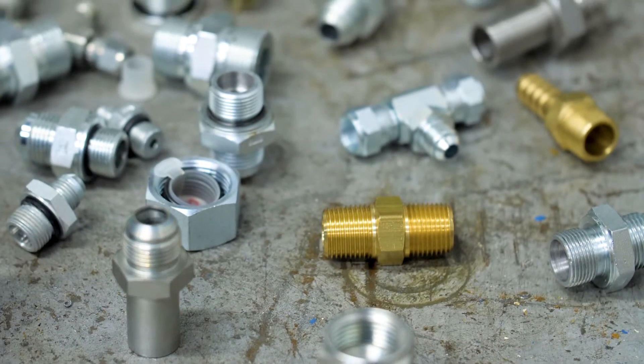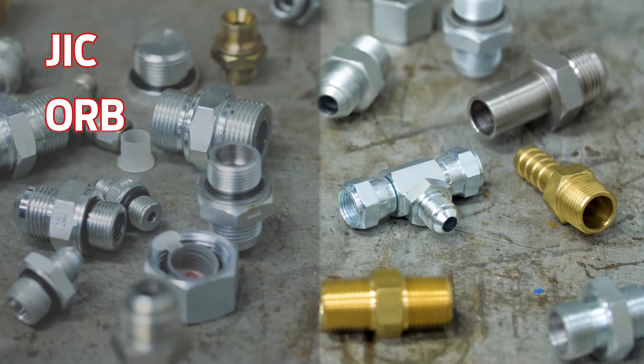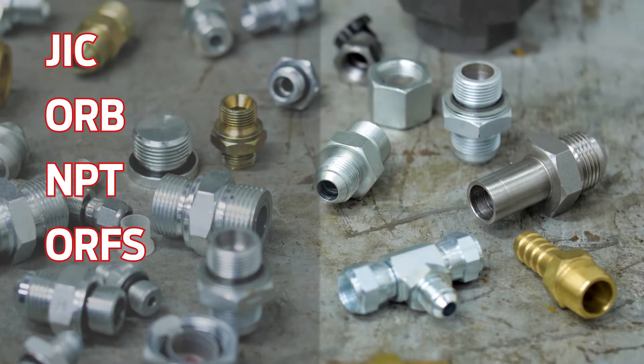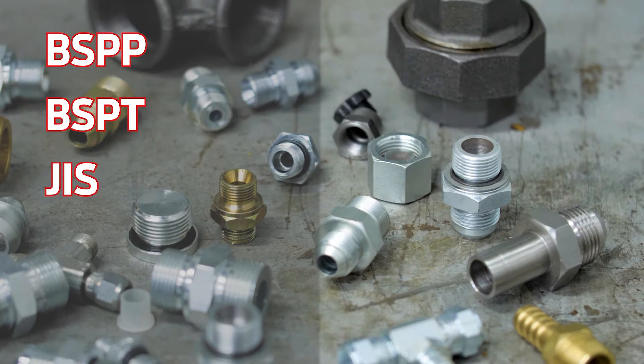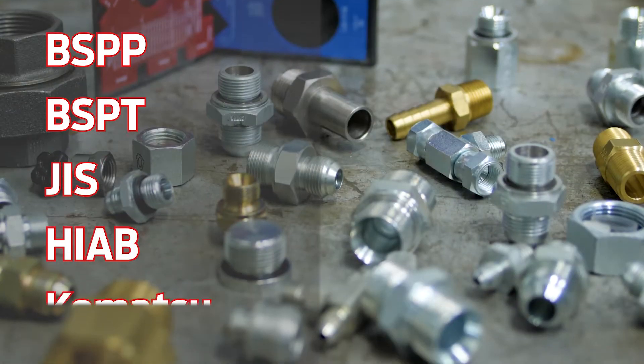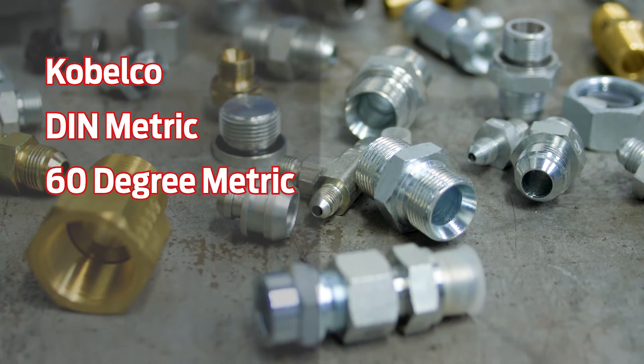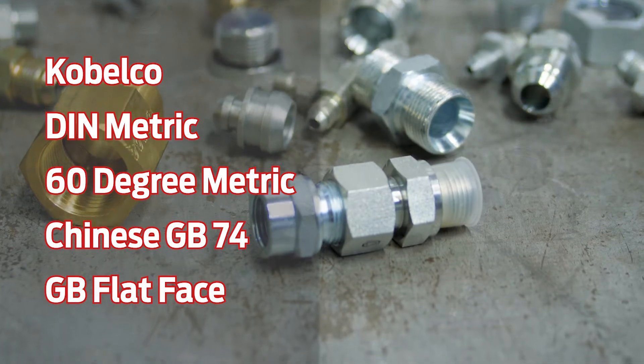Adaptal's thread gauge kits, also known as the TGK series, can identify JIC, O-Ring Boss, NPT, O-Ring Face Seal, as well as foreign threads including BSPP, BSPT, JAS, HIAB, Komatsu, Kobelco, DIN metric, 60 degree metric, Chinese GB 74, and GB flat face, and more.